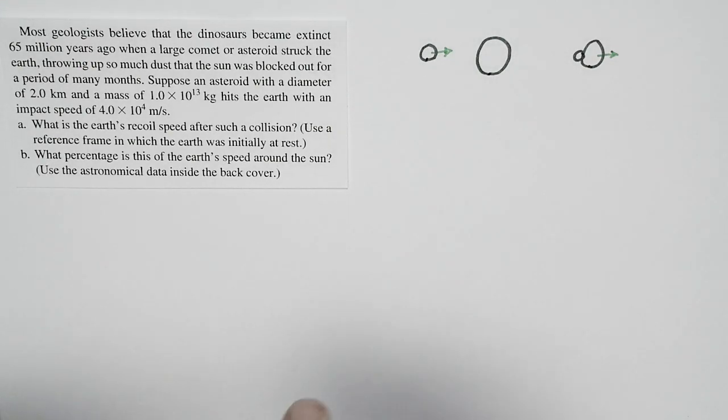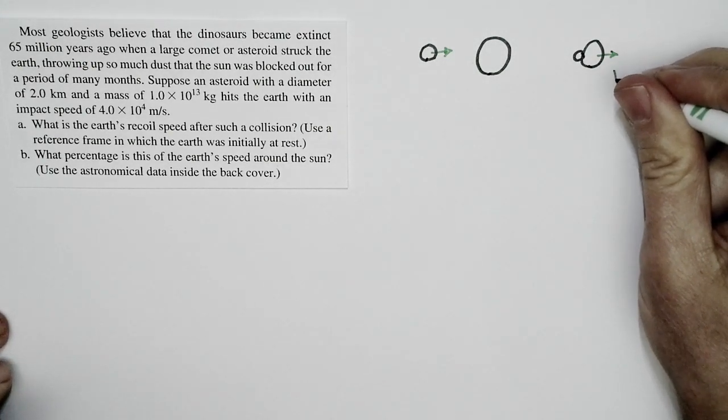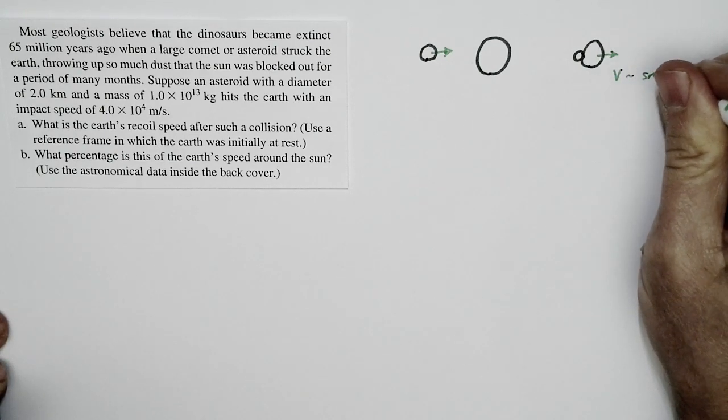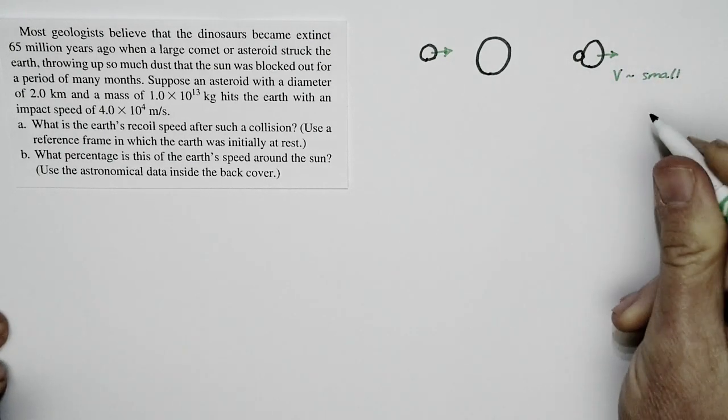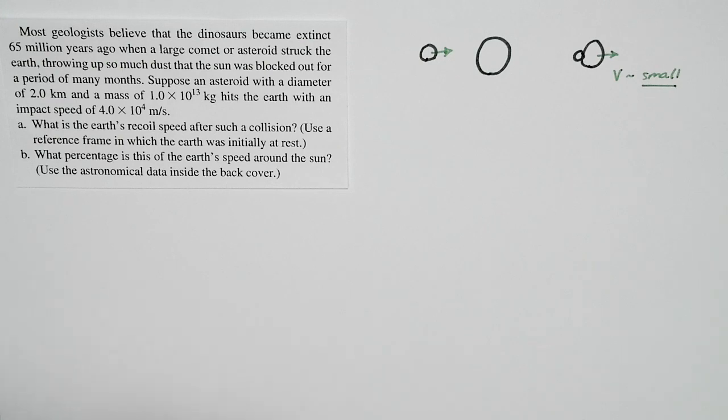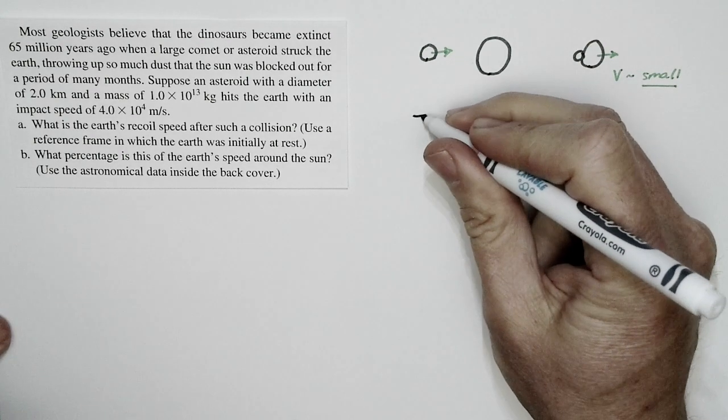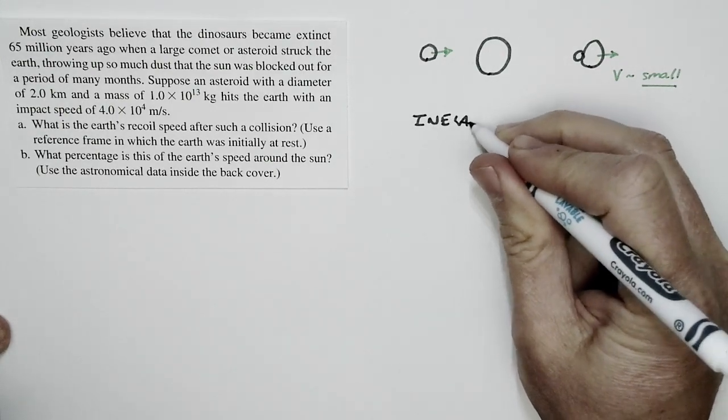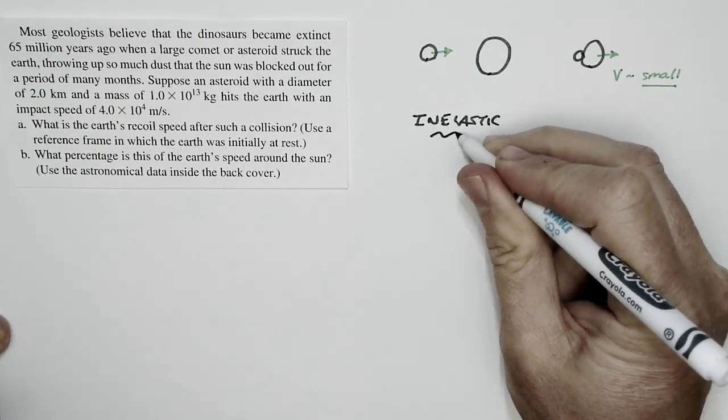So before we start the problem, we're going to expect that this speed is small. We expect the final speed of the Earth plus the asteroid to be tiny, because we don't think this was the issue. We can do a problem to solve just how big it is. And this is an example of an inelastic collision.